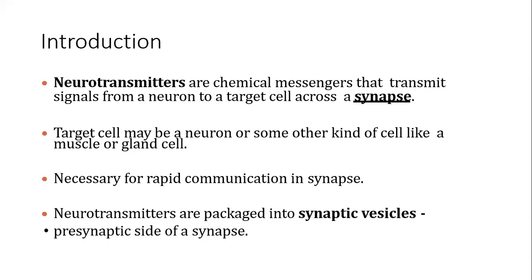How does a neuron transfer its message to another neuron or another cell? The way it transfers is through chemical messengers, and these chemical messengers are called neurotransmitters. Neurotransmitters are chemical messengers synthesized by a pre-ganglionic neuron and released into the synapse in response to an action potential. The synapse is the junction between two neurons.